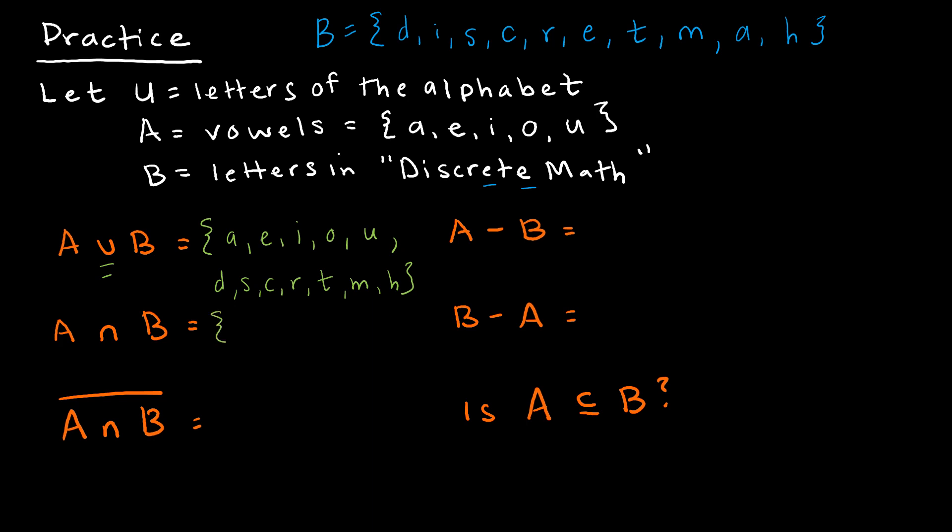The intersection would be only those elements that are in both A and in B. So I can see here I've got an A in both sets, I've got an E in both sets, I've got an I in both sets. I don't have an O, and I don't have a U. So the intersection would just be A, E, I, and the O and U are not contained in the word discrete math.